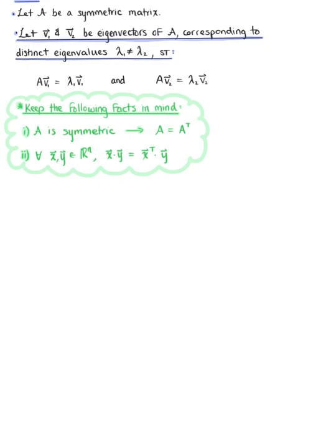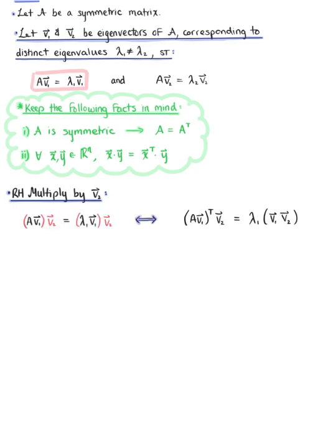With these properties in mind, let's take the first eigenvalue equation and right-hand multiply by vector v₂. We can rewrite this as the transpose of matrix A times vector v₁, multiplied by vector v₂, equals λ₁ times the dot product of v₁ with v₂.